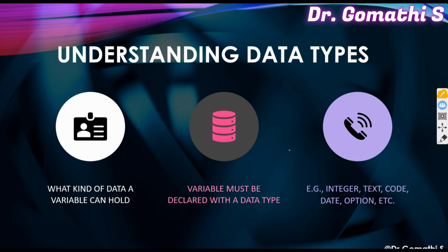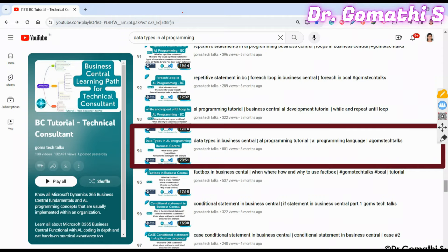A variable must be declared with its data type. If you're a Python developer, you know Python doesn't require explicit type declaration — it uses dynamic typing and automatically understands the type based on the value entered. But in AL, since we are developing an ERP system, you must specifically declare what type of data you are going to enter. For more on data types, check my playlist on the Goomstack Docs channel — the 94th video covers data types in Business Central AL programming.